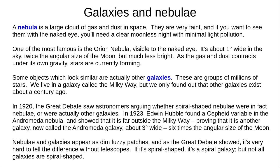But in 1923, Edwin Hubble found a Cepheid variable in the Andromeda Nebula, and its analysis proved that it was far outside the Milky Way. The Andromeda Nebula became the Andromeda Galaxy. It's the nearest and largest visible galaxy, three degrees wide — six times the angular width of the moon. Nebulae and galaxies are very similar in appearance to the naked eye. If you can make out a spiral shape, you're looking at a galaxy. But if not, it could be either.